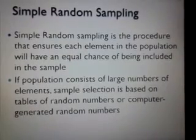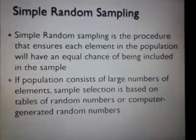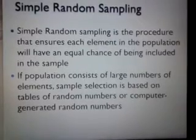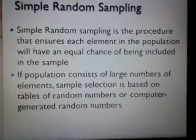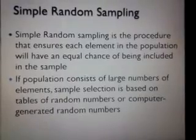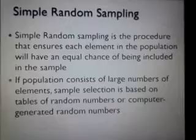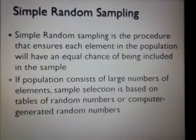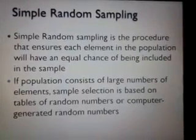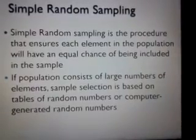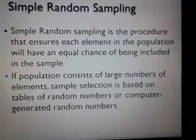If the population consists of large numbers of elements, sample selection is based on tables of random numbers or computer-generated random numbers. If the population size is small — say 100, 150, or 200 elements — we can use the sheets-in-a-jar method. But if population size is large, we use a table of random numbers or computer-generated random numbers. We choose one number randomly from that table, then move upward, downward, rightward, or leftward to choose the next numbers. Those numbers correspond to elements in the population, to which we assign numbers, and proceed with simple random sampling.